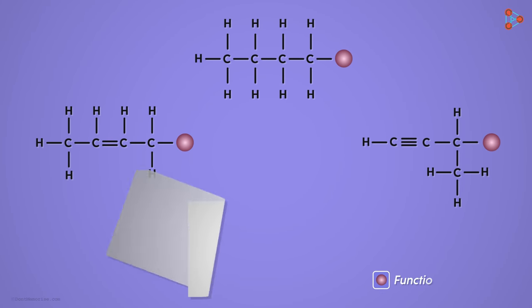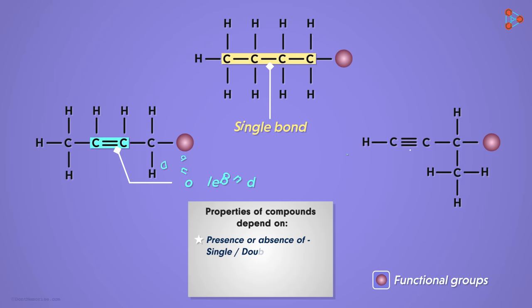Now in any case, the properties of the compound formed will depend on two factors. First factor is the presence or absence of a single, double or triple covalent bonds between the carbon atoms. It means the compound being saturated or unsaturated will define many of its reactions.